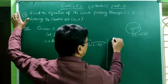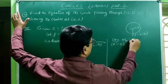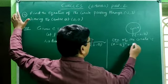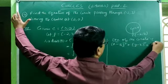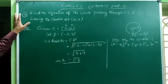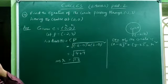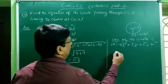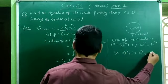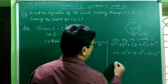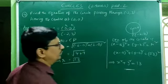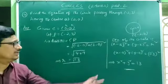The equation of the circle is (x−h)² + (y−k)² = r², where (h, k) is the center. With center (0, 0) and r = √13: (x−0)² + (y−0)² = (√13)², which simplifies to x² + y² = 13.